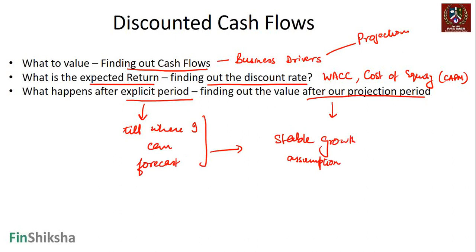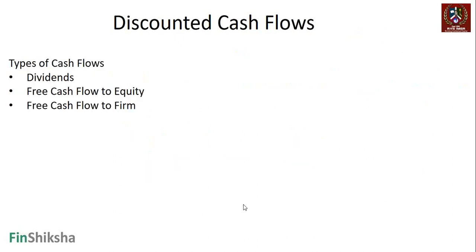We could also use other mechanisms to find the value of the company after the explicit period — we'll look at those in more detail as we go along. Now, what are the different types of cash flows that exist for any investor when looking at a company?